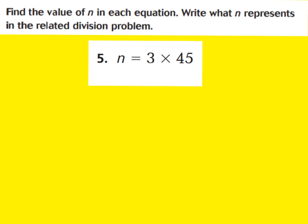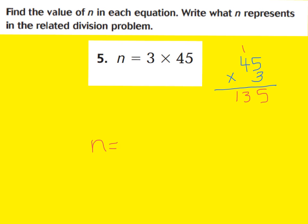Let's look at question 5 and some algebra equations. We can find the value of n, which is our unknown number, in each equation. We want to write what n represents in our related division problem. So n would equal what 3 times 45 is. Pause the video and work out 45 times 3, then write down what you think the value of n is. Using the commutative property, I flipped my factors: 3 times 5 ones is 15 ones; 3 times 4 tens is 12 tens, plus 1 more is 13 tens. So n has a value of 135.